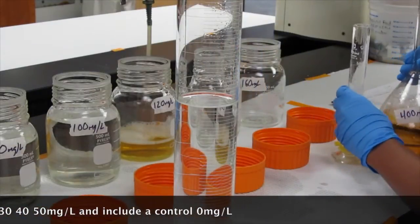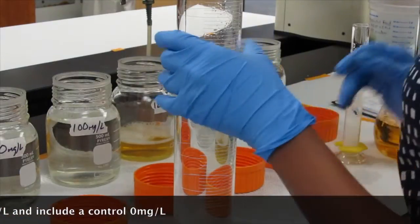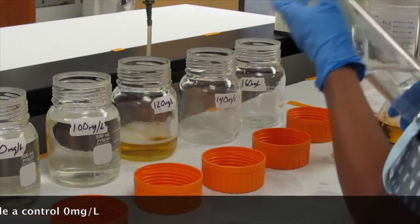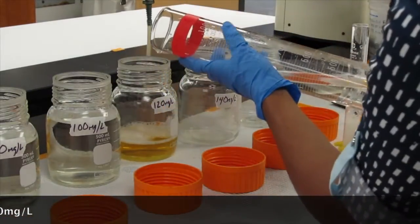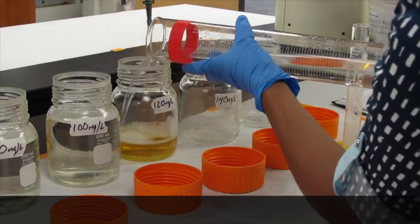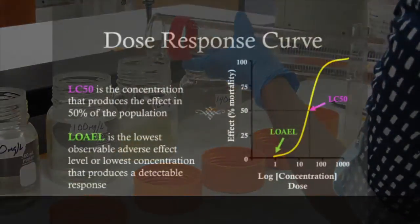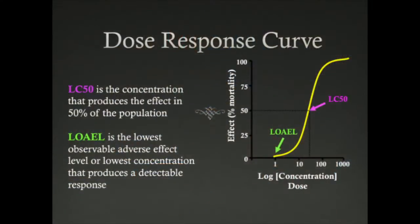The point where there is 50% mortality is known as the LC50, which is the lowest concentration divided by 50%. This represents the concentration of a chemical that has killed 50% after a specific amount of time.